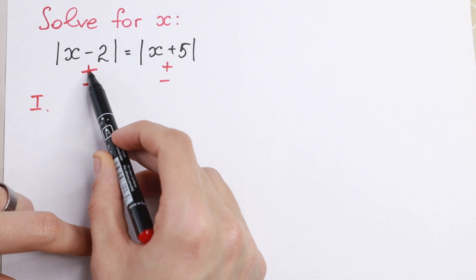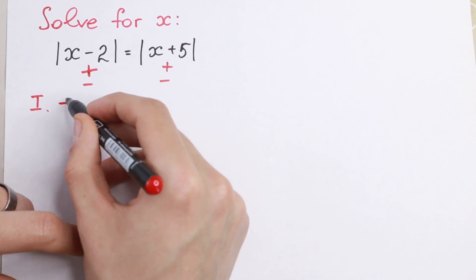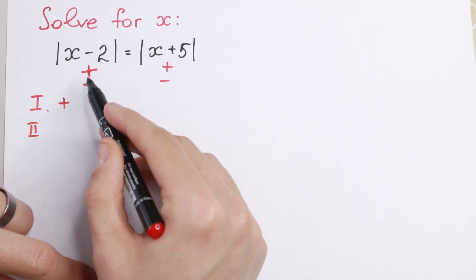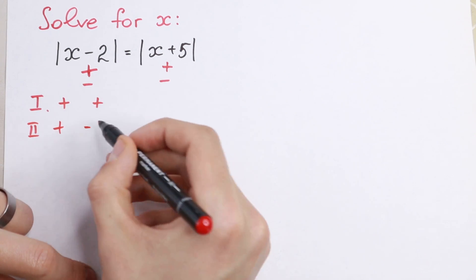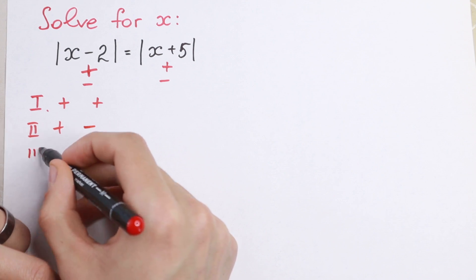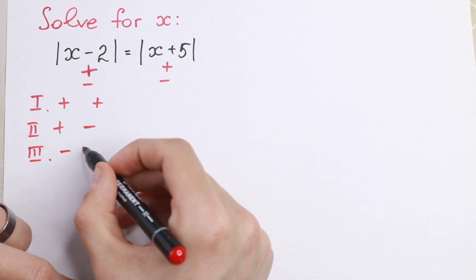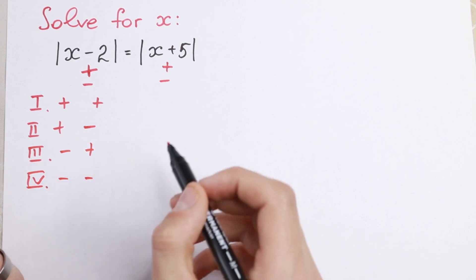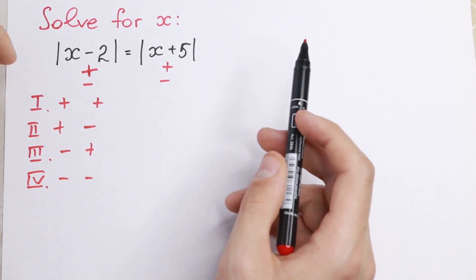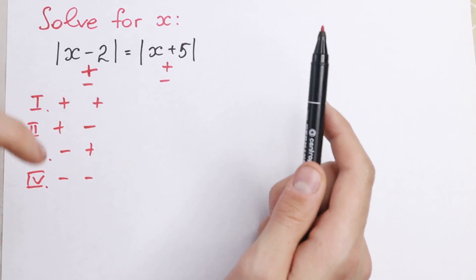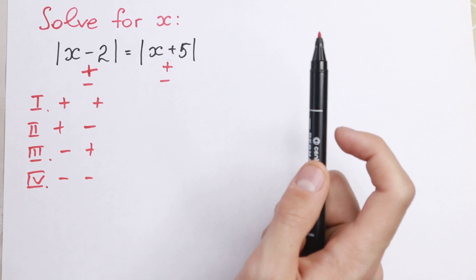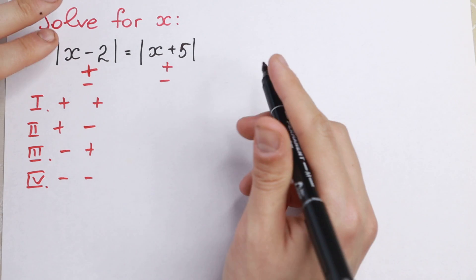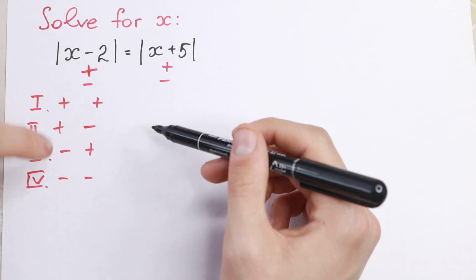First combination: this one is positive and this one is positive, so plus and plus. Second, it can be positive but this can be negative, so plus and minus. Third case, this can be negative and this can be positive. And the fourth case we will have both negatives. So we just need to solve these cases — two of them will have no roots, but two of them will give you a root. Just forget about absolute value and solve these combinations.